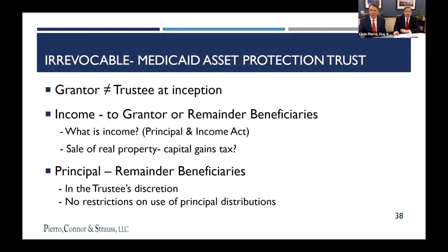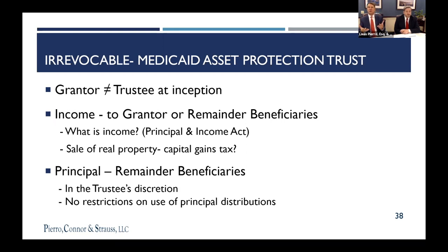You typically have a child or friend or family member as your trustee, and ultimately what's in that trust — the principal — goes to the beneficiaries. If the elimination of the step-up in basis rule does not happen, everything that comes out of that trust goes to your beneficiaries with a fully stepped-up basis. So it works from both a Medicaid perspective and a tax perspective extremely well.